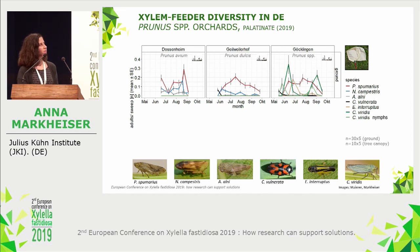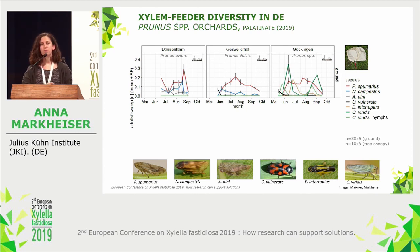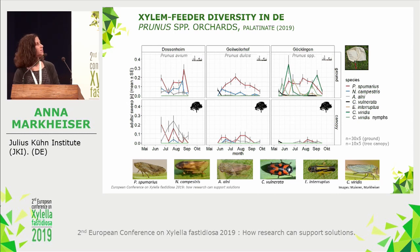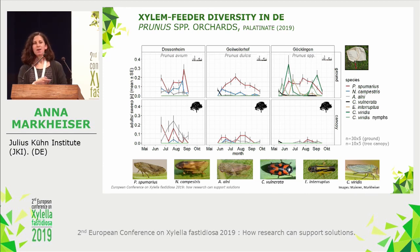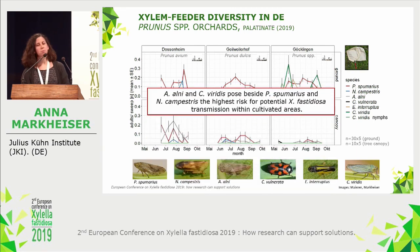In some orchards we even find a higher population density of Cicadella viridis than Philaenus spumarius. Cicadella viridis is the only species performing two generations per year, which means they will lose their infectivity during the summer period. In the crown cover of these orchards we also see Philaenus spumarius, Aphrophora alni, some individuals of Cicadella viridis, and Neophilaenus campestris. Cicadella viridis is normally restricted to the crown cover, but due to the high population density in some plots, it poses — alongside Neophilaenus campestris, Philaenus spumarius, and Aphrophora alni — the highest risk for potential spread of Xylella fastidiosa.